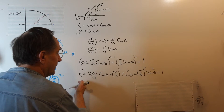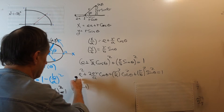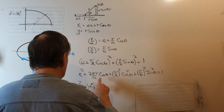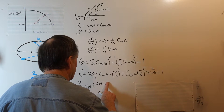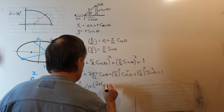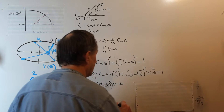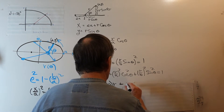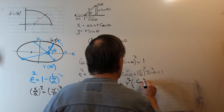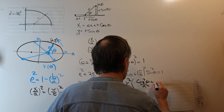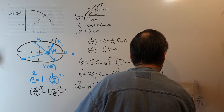Bringing the 1 over to the left side to form e squared minus 1, plus 2e cosine theta all over a times r, plus r squared times cosine squared theta over a squared plus sine squared theta over b squared, equals 0. The equation is quadratic in the radius r.